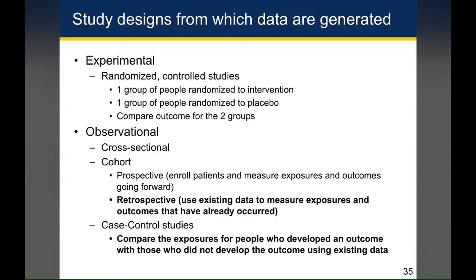Recognize that the way the study is conducted that generates the data has a large impact on how you're able to analyze that data. Ideally, when we want to test the effect of an intervention on an outcome, we would conduct a randomized control study, where one group of individuals is randomized to the intervention, another group is randomized to the comparison group, which might be a placebo, and we're able to compare the outcome for the two groups. If you're analyzing data generated in a randomized control trial, you might not need to stratify or worry about confounding, because this study design is designed to eliminate observed and unobserved confounding.